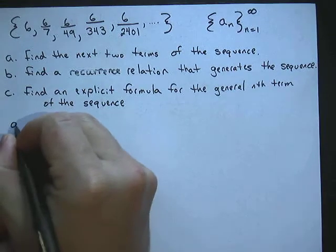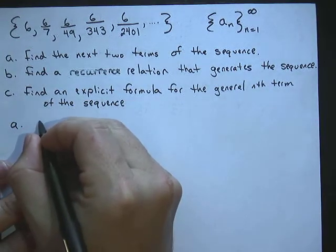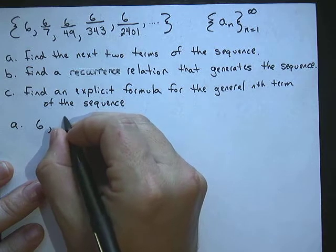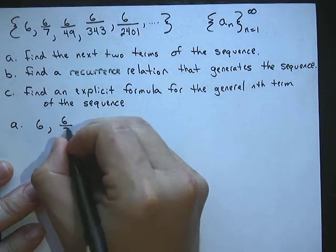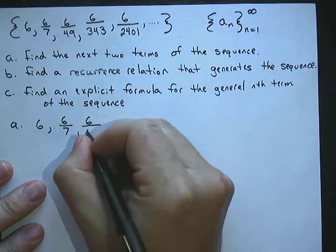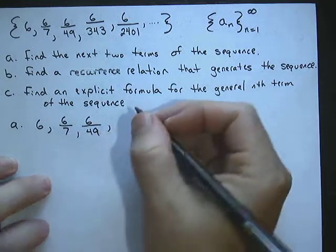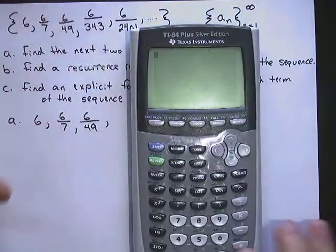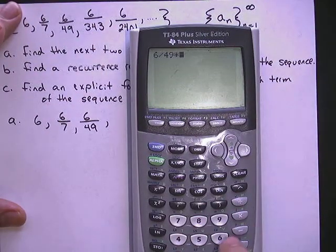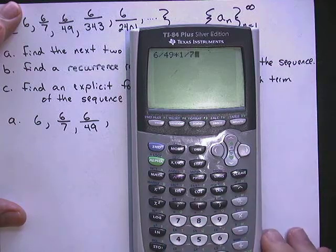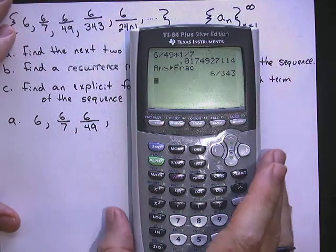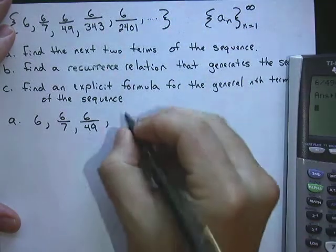So let's see if that continues to hold. So 6, and then 6 over 7, we know that one works. If I multiply that by 6 over 7, we do get 6 over 49. Let's see if it works again. So I'll do the 6 over 49, and then I'm going to times that by 1 over 7. I get 6 over 343. So that one works.